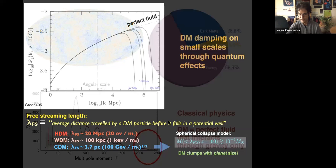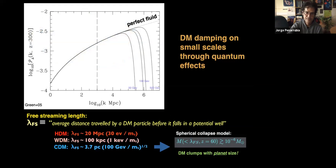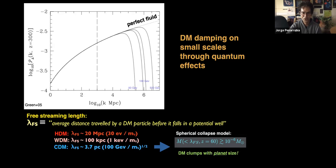The question now is: if dark matter is made of particles, where are we going to see deviations from the perfect fluid? Basically all dark matter particle candidates predict some damping of scales due to quantum effects. Those quantum effects can vary depending on the model, but this truncation is predicted by all particle models. The scale or energy where this truncation arises mainly depends on the dark matter particle mass.